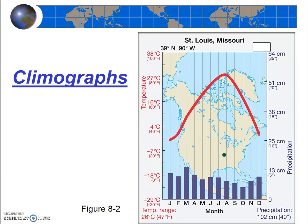Our next topic is climographs, which are probably the most important tool that we will use to study and classify climates. A climograph is simply a graphical representation of monthly temperature and precipitation data at a specific weather station.